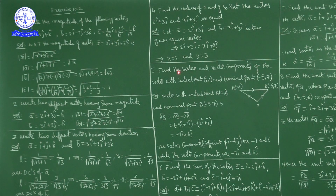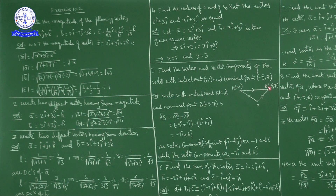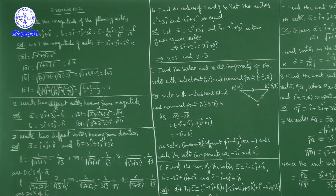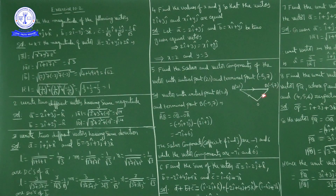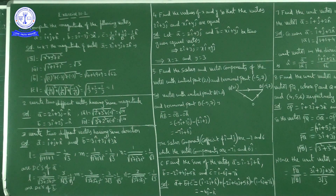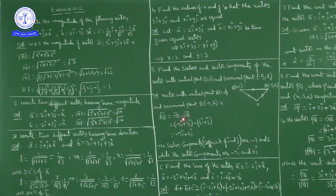Question 5: find the scalar and vector components of the vector with initial point (2, 1) and terminal point (−5, 7). Let O be the origin. Then OA̅ = 2î + ĵ and OB̅ = −5î + 7ĵ. By triangle law of vector addition, AB̅ = OB̅ − OA̅.